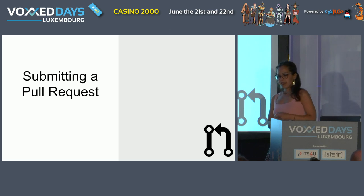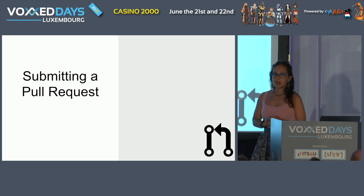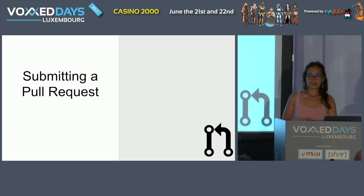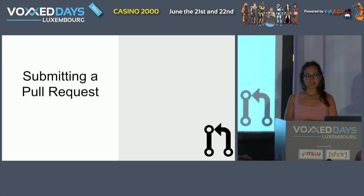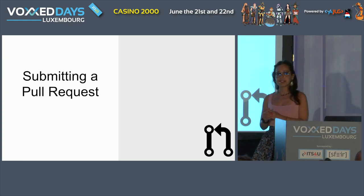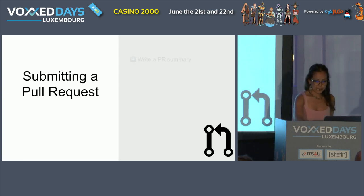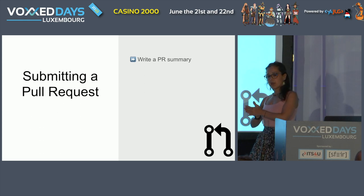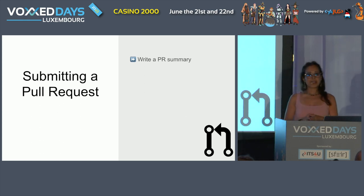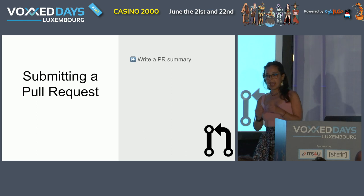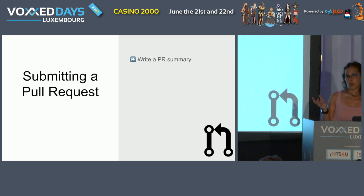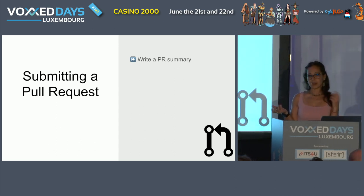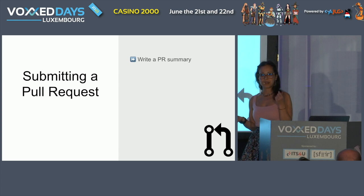As I mentioned, the code review process has two folds. The first one is creating and submitting a pull request. As an author developer, when I submit a pull request asking people to review it, I should keep a few things in mind. The first one is I should provide a summary describing my goal from this pull request. That's very helpful because it will give the reviewer context — what I'm trying to do — so they will understand and give me proper feedback.